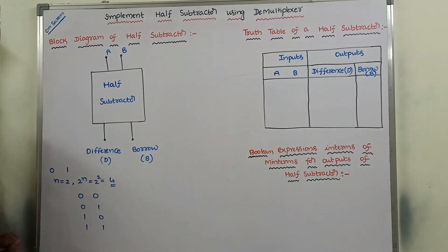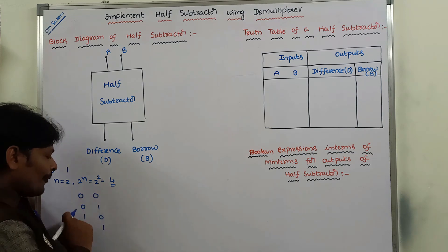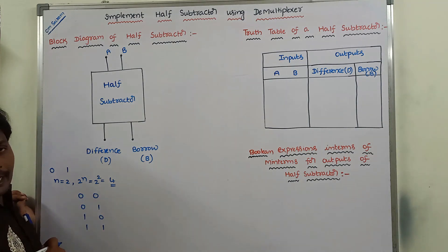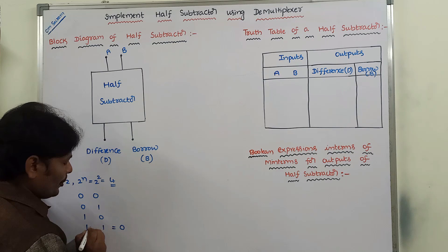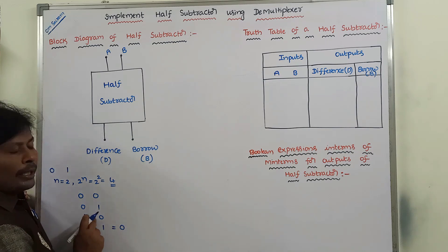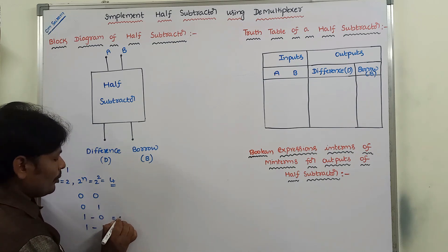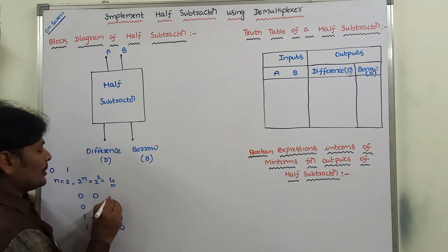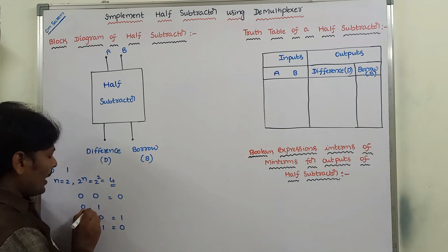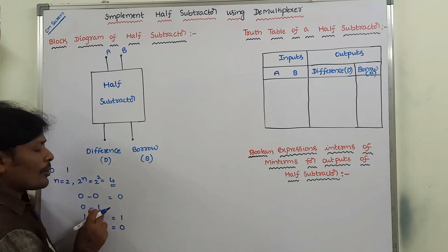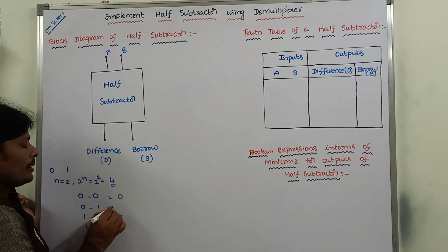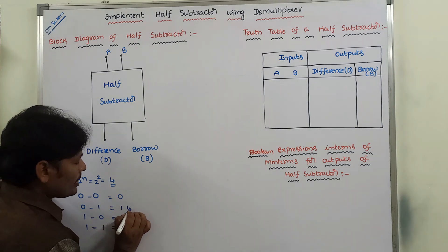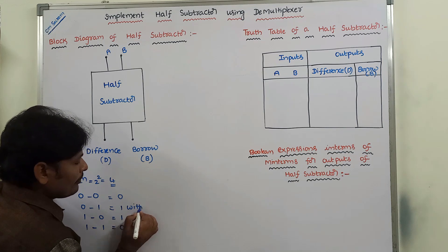These are the four possible input combinations. How to perform the subtraction operation between these two bits? 1 minus 1 equals 0. Next, 1 minus 0 equals 1. 0 minus 0 equals 0. 0 minus 1 is not possible directly — we take a borrow. In binary, each borrow is worth 2, so 2 minus 1 equals 1. Here we write 1 with borrow 1.